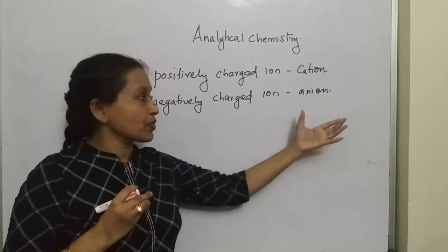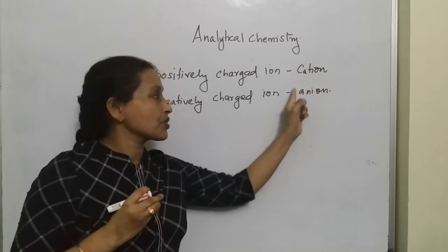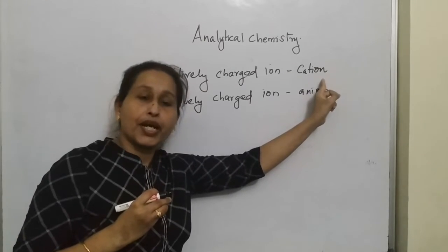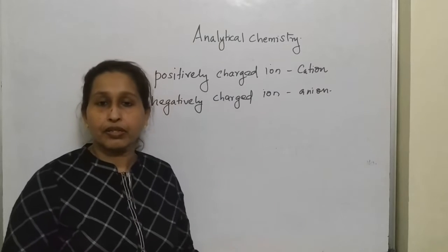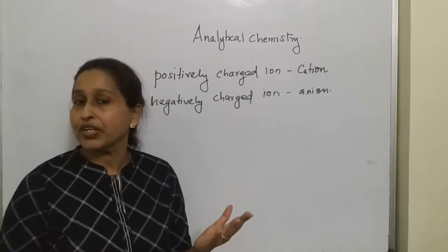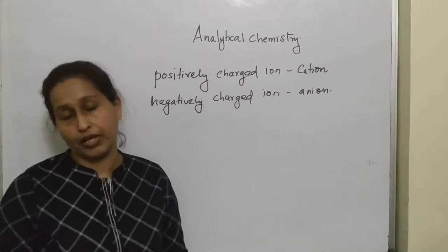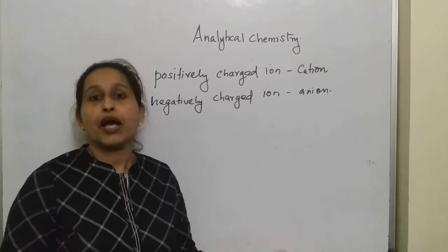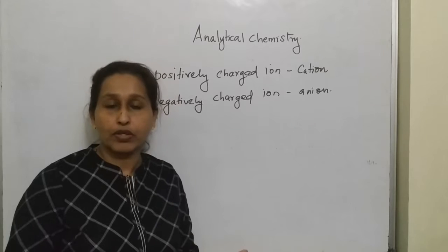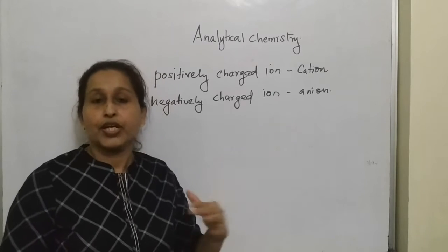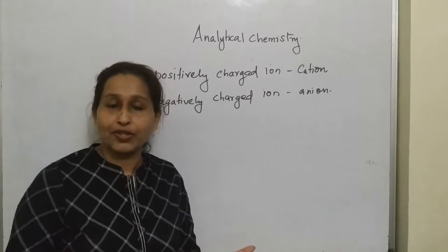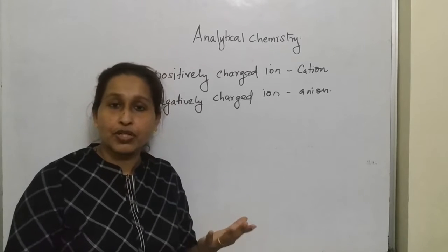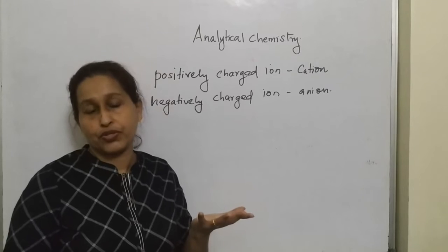So in this chapter, we don't detect or identify the anion — we will identify the cation. For doing analysis, we have to perform the chemical test. When you enter the chemistry lab and are provided with a salt — we are analyzing salt only — the first thing you have to do is observe its physical appearance.